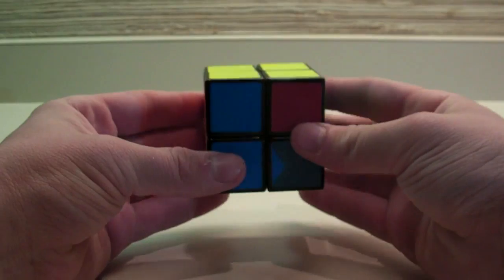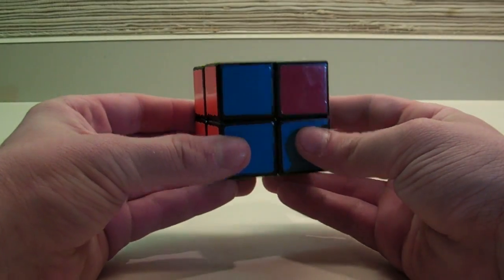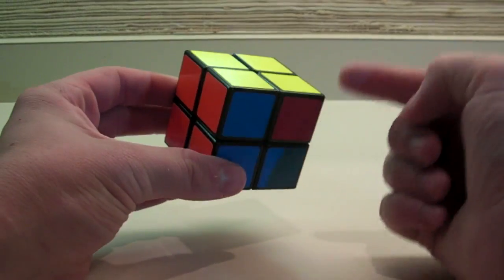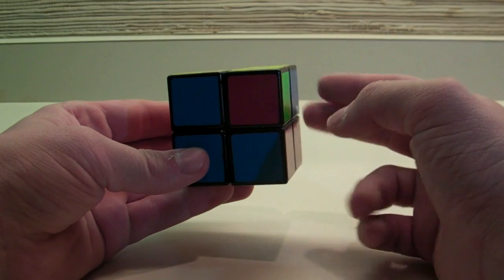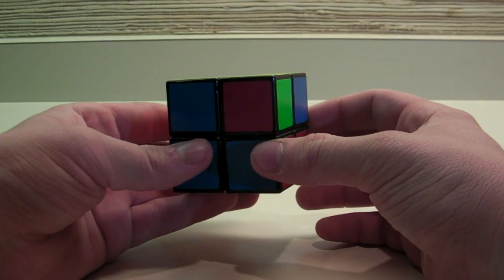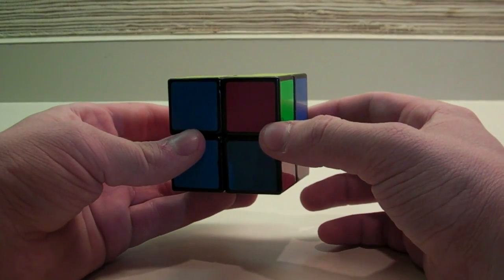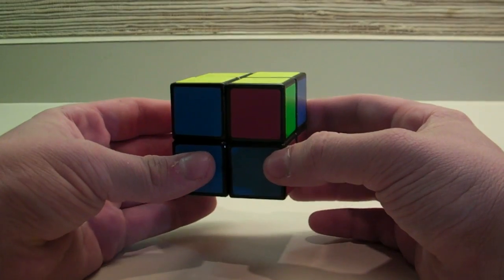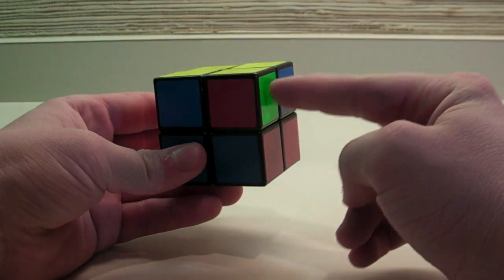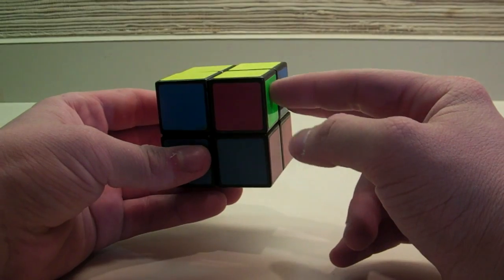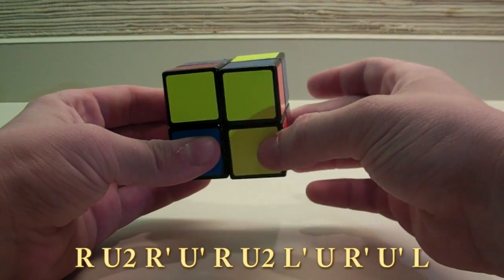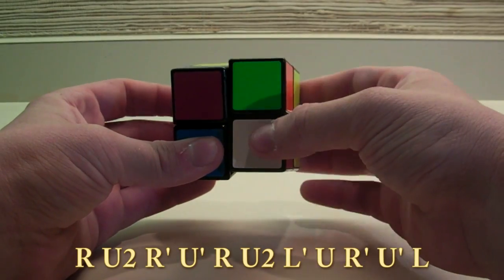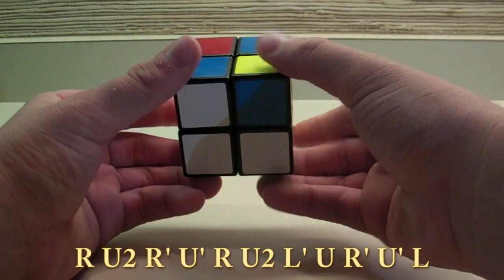The fourth case that you can get is where the bottom layer is solved, and the top layer has two adjacent corners that need to be switched. You can use the T permutation, which you should know if you know 2-look PLL or 1-look PLL, or you can use this algorithm. Position the two corners that you need to switch on the right side. You can find R, U2, R', U', R, U2, L', U, R', U', L.